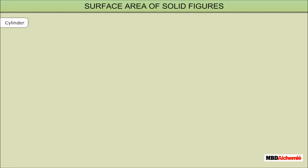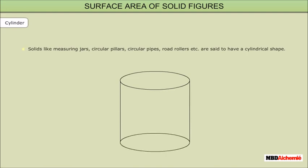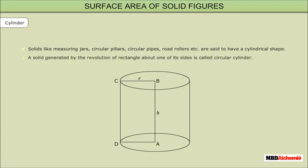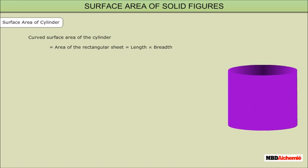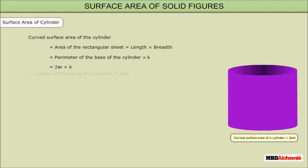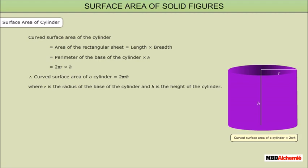Cylinder: Solids like measuring jars, circular pillars, circular pipes, road rollers, etc. are said to have a cylindrical shape. A solid generated by the revolution of a rectangle about one of its sides is called a circular cylinder. In the animation, the rectangle ABCD — if AB is taken as the axis of revolution and revolved on it, the solid formed is a cylinder. The curved surface area of the cylinder equals the area of the rectangular sheet, which is length × breadth = perimeter of the base × h = 2πr × h. Therefore, the curved surface area of a cylinder is 2πrh, where r is the radius of the base and h is the height.